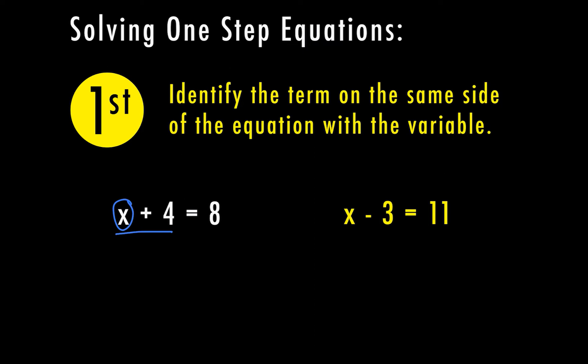The other example here is x minus 3 equals 11. My variable on this one is also x, and on the same side as the variable, I have x minus 3. Now it's important to know when I say the same side, I'm talking about different sides of the equal sign. That's what's going to split our problem into two parts — side 1 and side 2. We want to keep those sides balanced in order to solve for x.